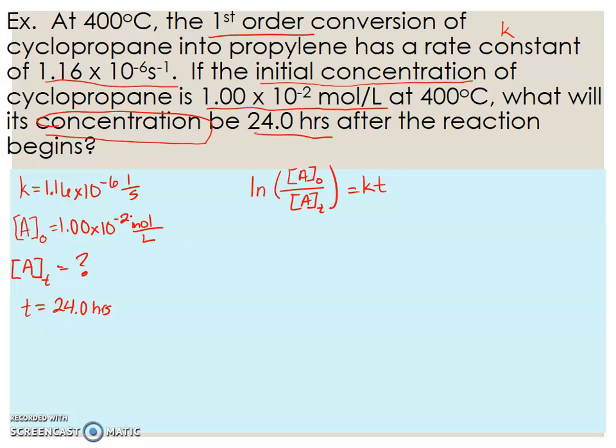We know our initial concentration. We are trying to find the concentration at time t. We know our k and we know our time. Now one thing that I can see here is that our rate constant is in terms of 1 over s, whereas our time is in hours. So we need to convert our time into seconds. One hour, we have 60 minutes, and then in one minute we have 60 seconds. This is equal to 86,400 seconds.